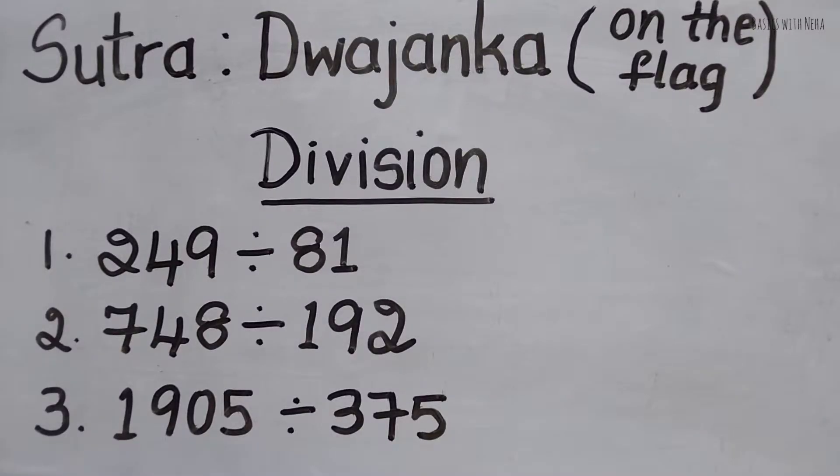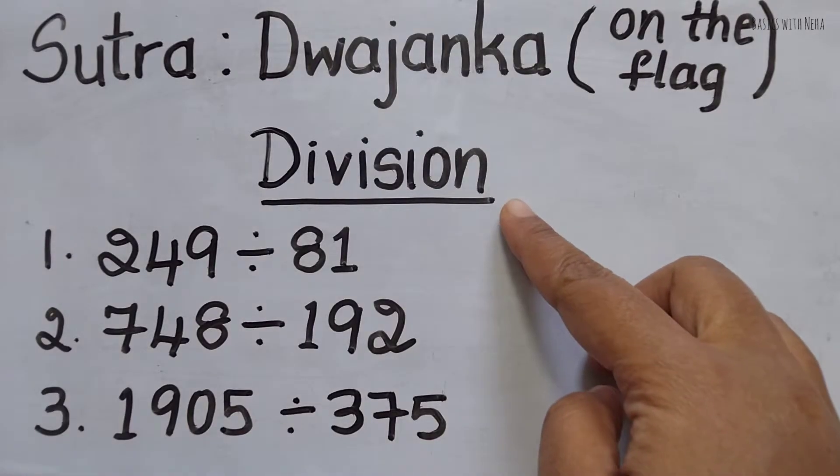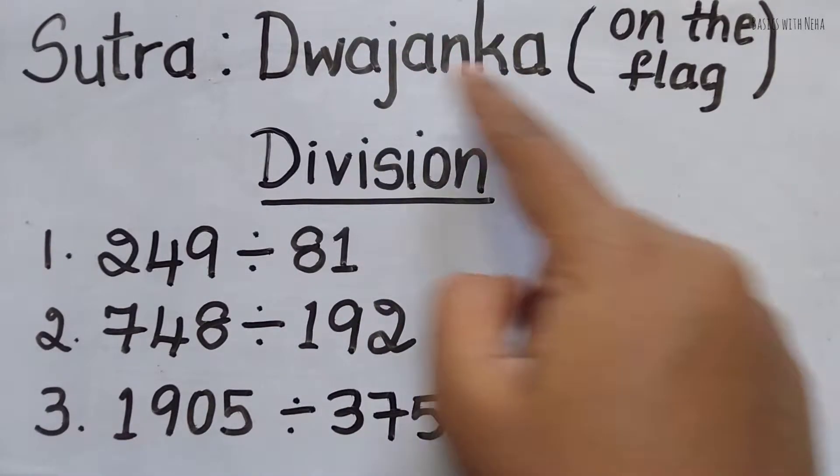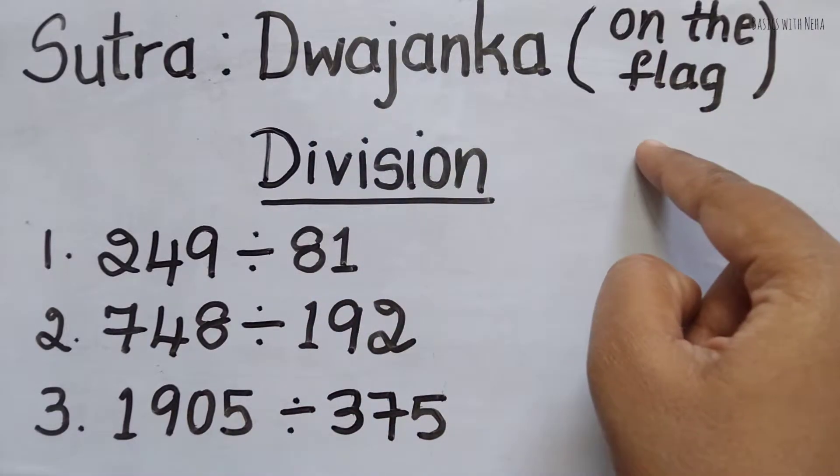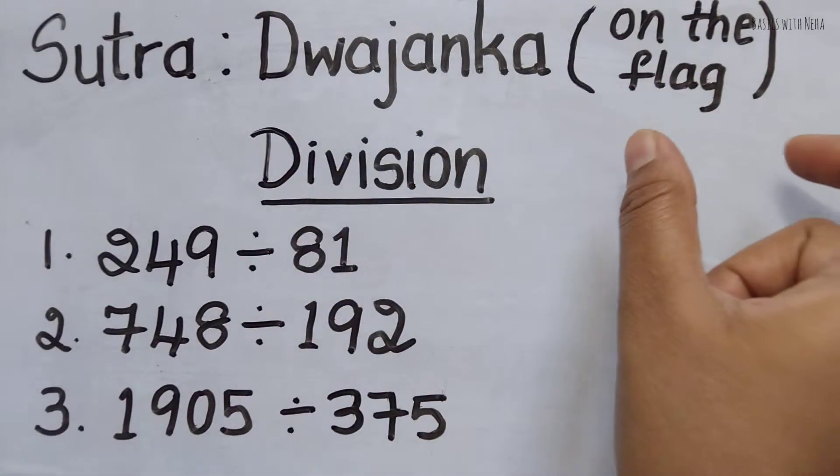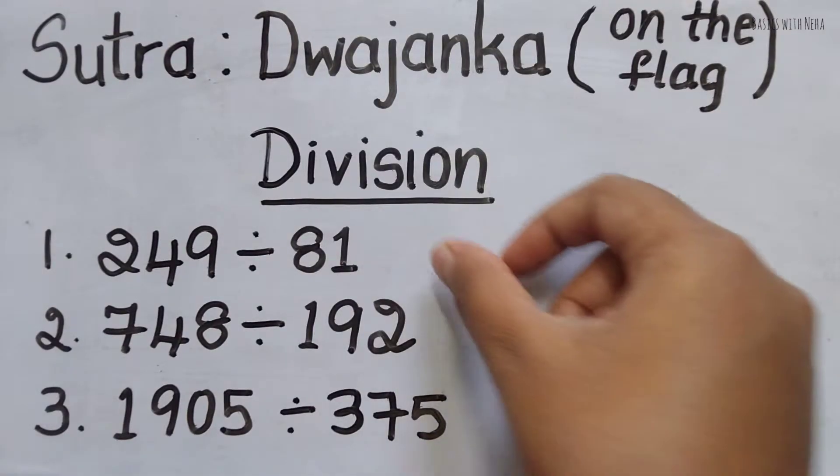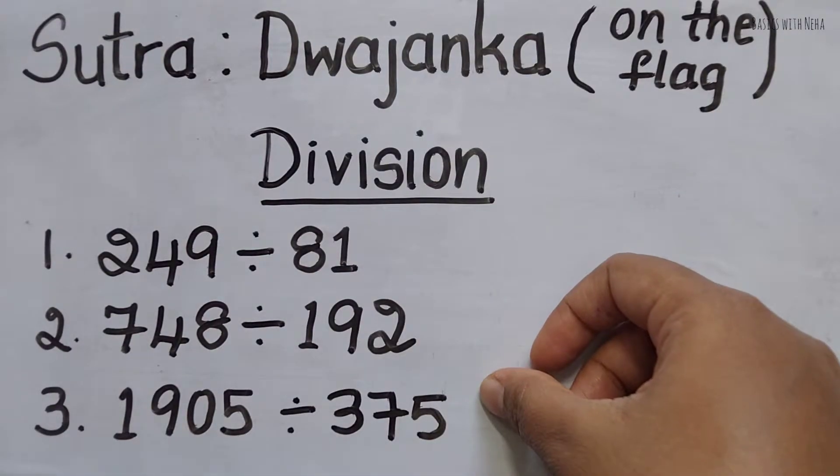Hello, welcome back to my YouTube channel. In today's video I'm going to show you how to do division using the Dvajanka method in Vedic maths. Basically, Dvajanka means 'on the flag' - the meaning of this particular sutra. This can be performed for any divisor which has two digits or three digits.